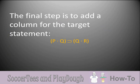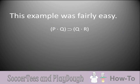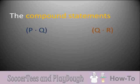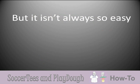The final step is just to add the target statement itself to the table, giving it its own column. This example was fairly easy because the compound statements contained within the target statement were both composed only of simple statements — in this case, P, Q, and R. But it isn't always that easy.